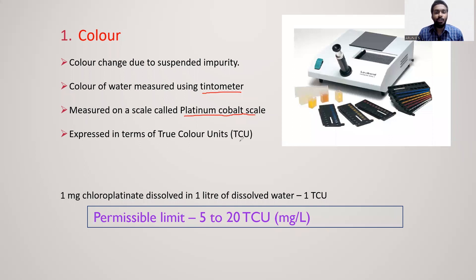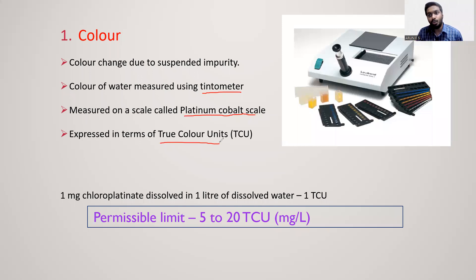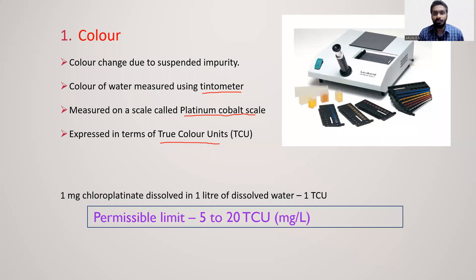The unit of color is TCU — True Color Units. One TCU is defined as the color produced by dissolving 1 milligram of chloroplatinate in 1 liter of distilled water. The permissible limit is 5 to 20 TCU, with a maximum of 10 milligrams per liter.